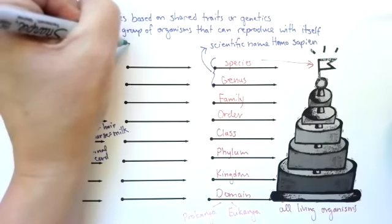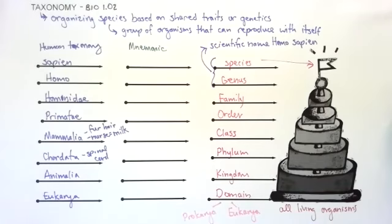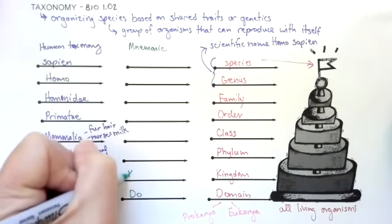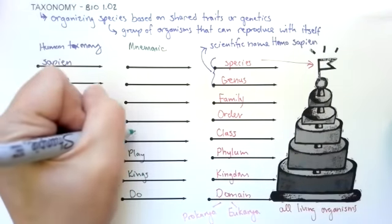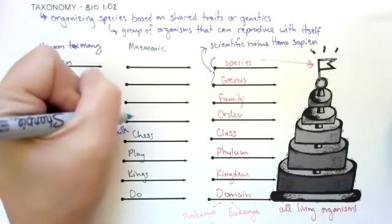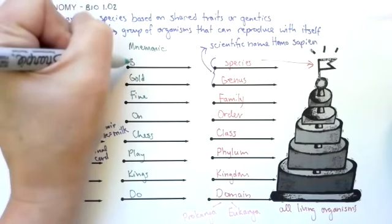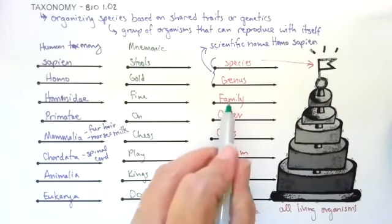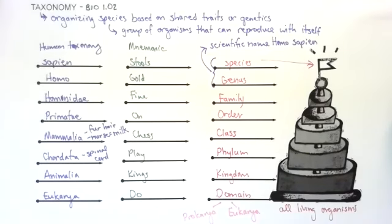We're going to use a mnemonic, spelled M-N-E-M-O-N-I-C. A mnemonic is a way to help you remember something. If you remember the mnemonic, do kings play chess on fine gold stools, that's going to help you remember domain, kingdom, phylum, class, order, family, genus, species. This is just to help you remember the order.